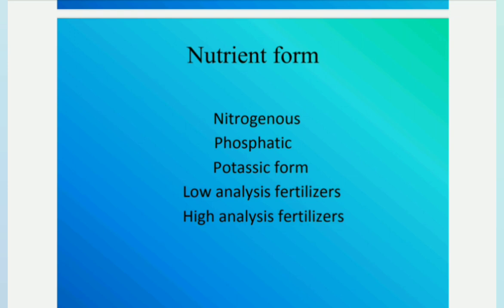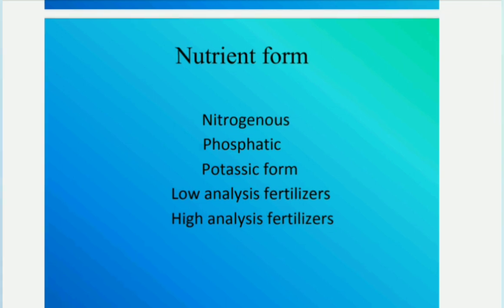Nutrient form classification is divided into nitrogenous, phosphatic, and potassium fertilizers. Fertilizer materials containing nitrogen are called nitrogenous fertilizers; they may also contain secondary nutrients like calcium and sulfur. Similarly for phosphorus and potassium. These are classified again into two types: low analysis fertilizers and high analysis fertilizers.